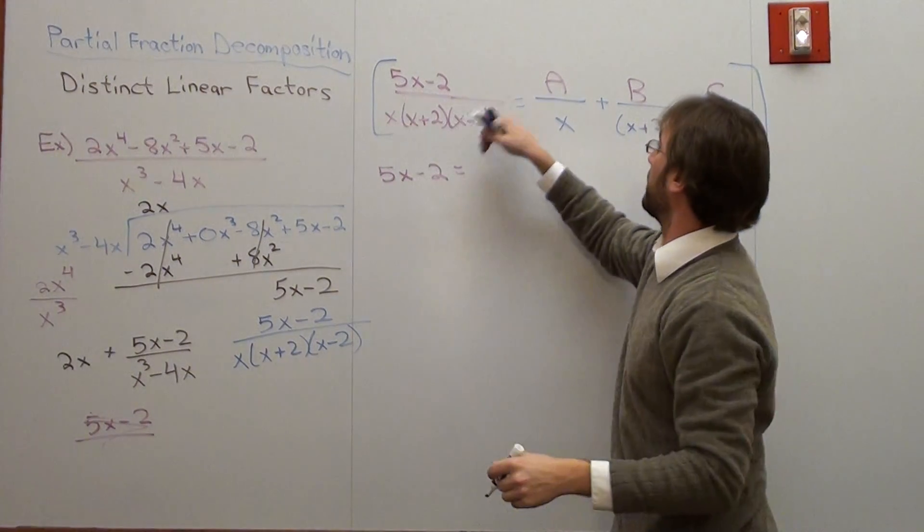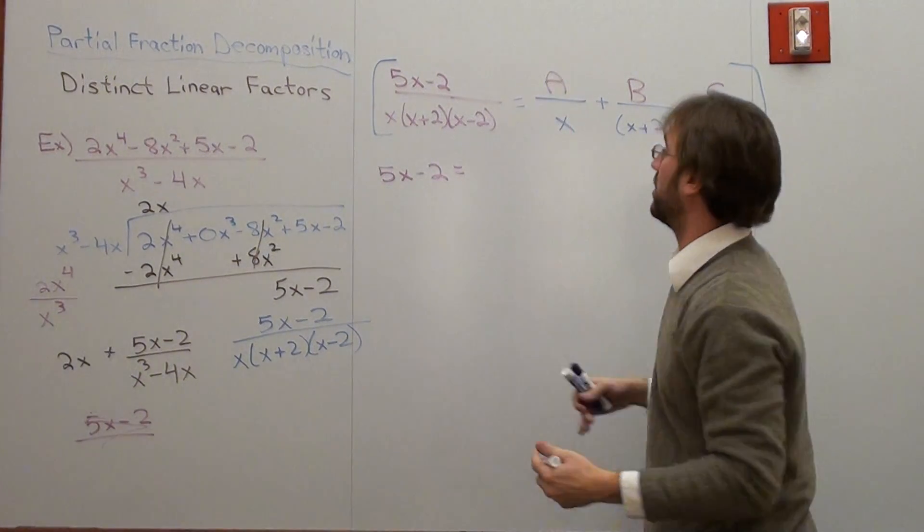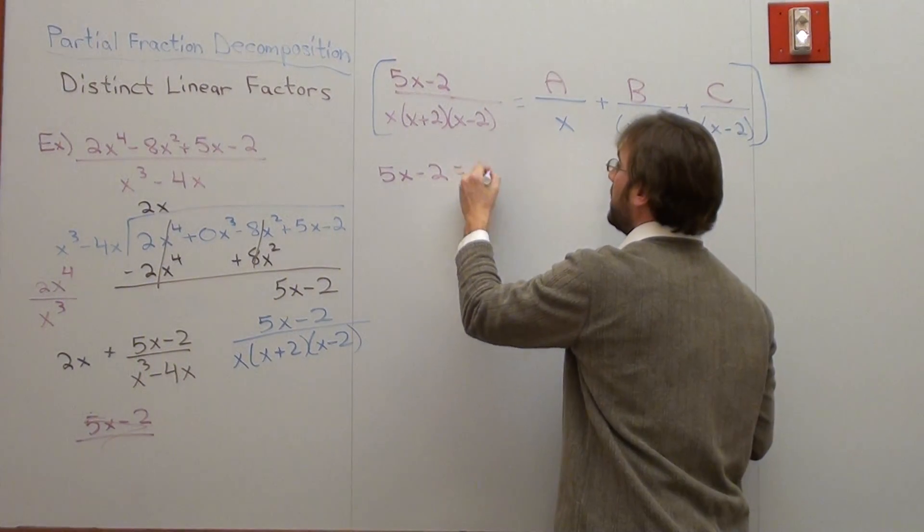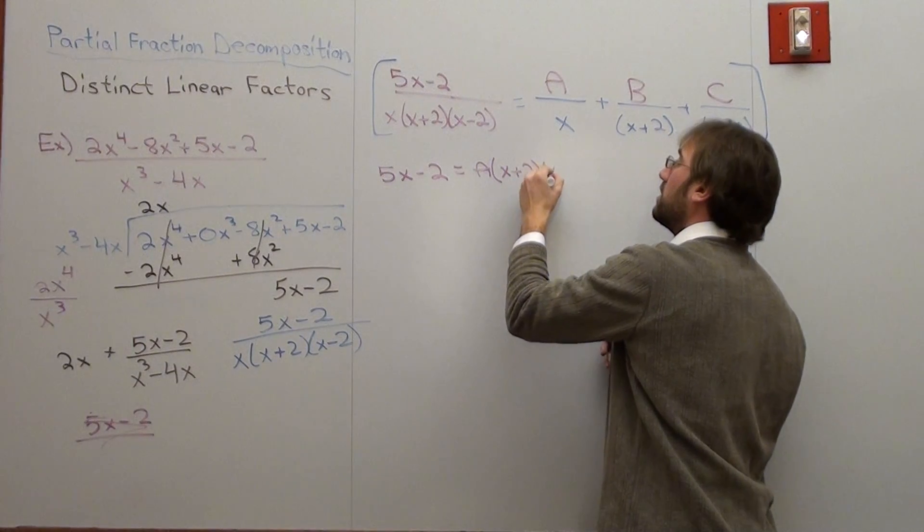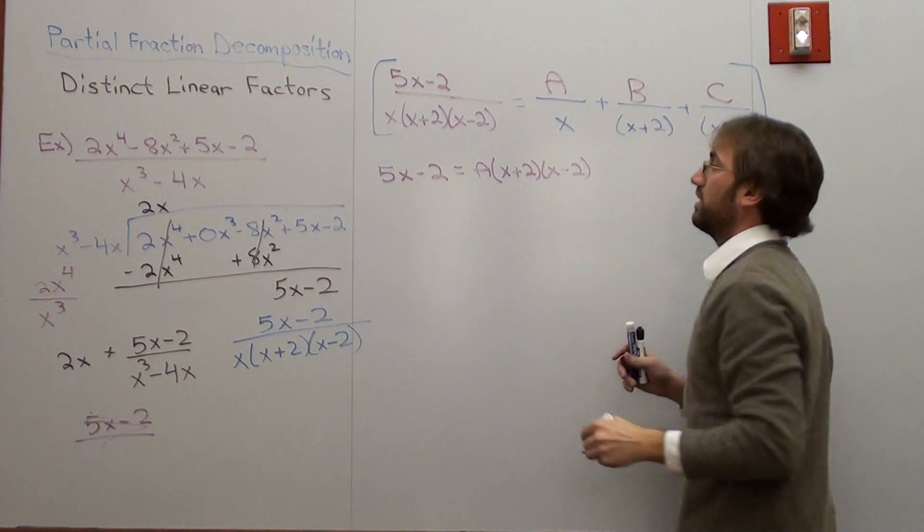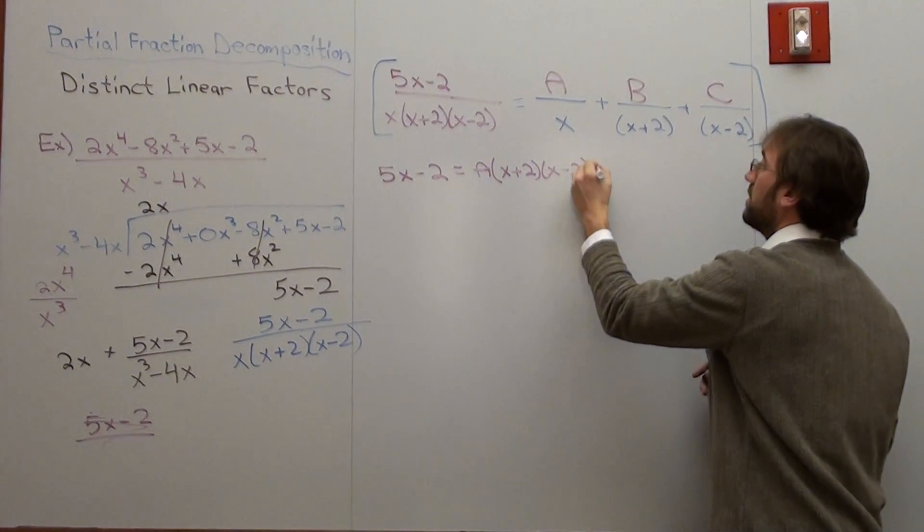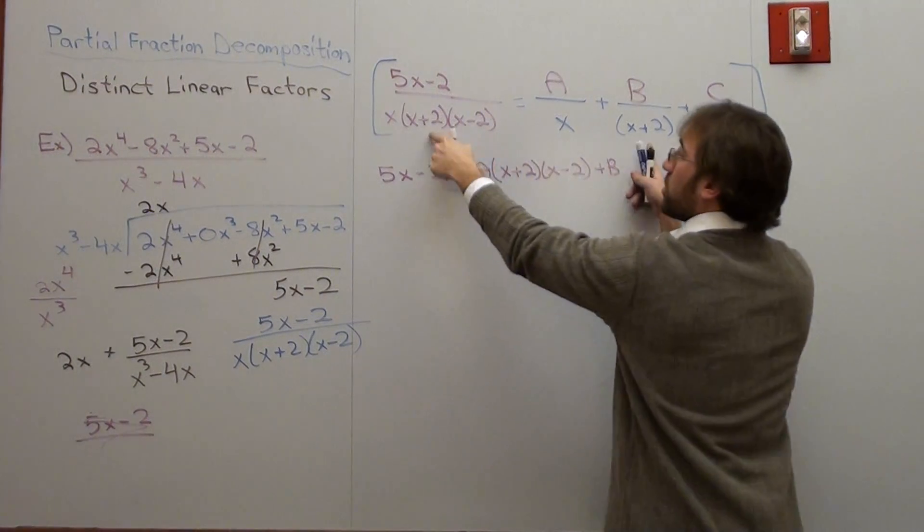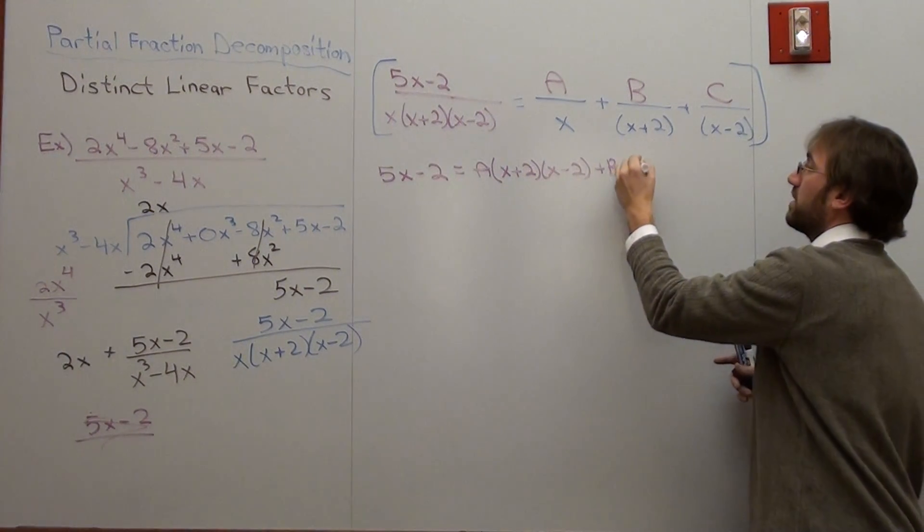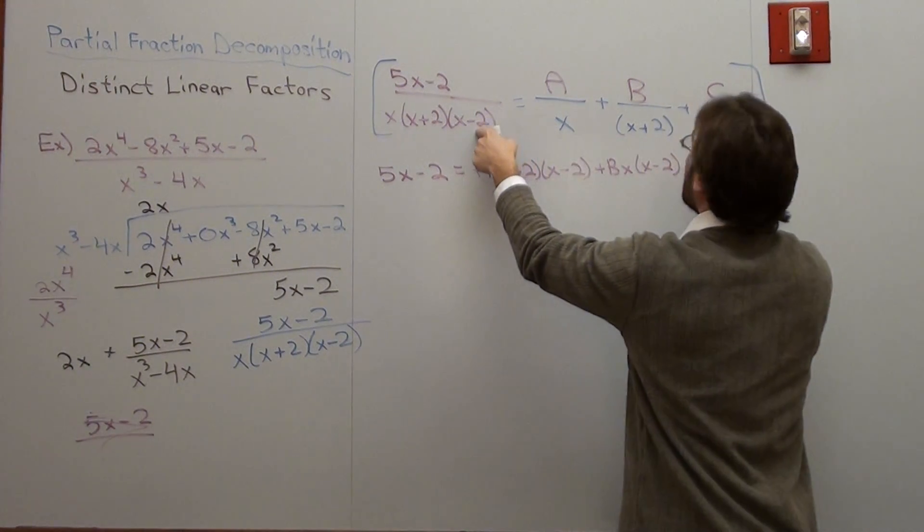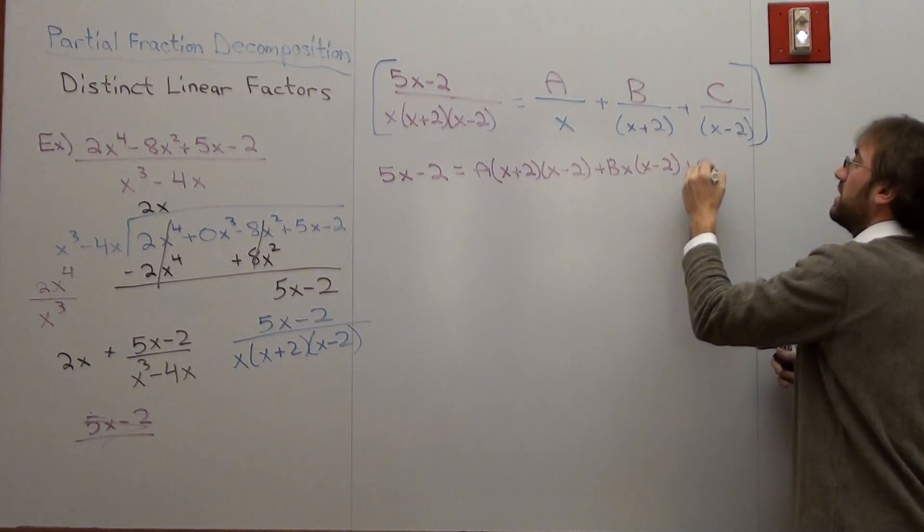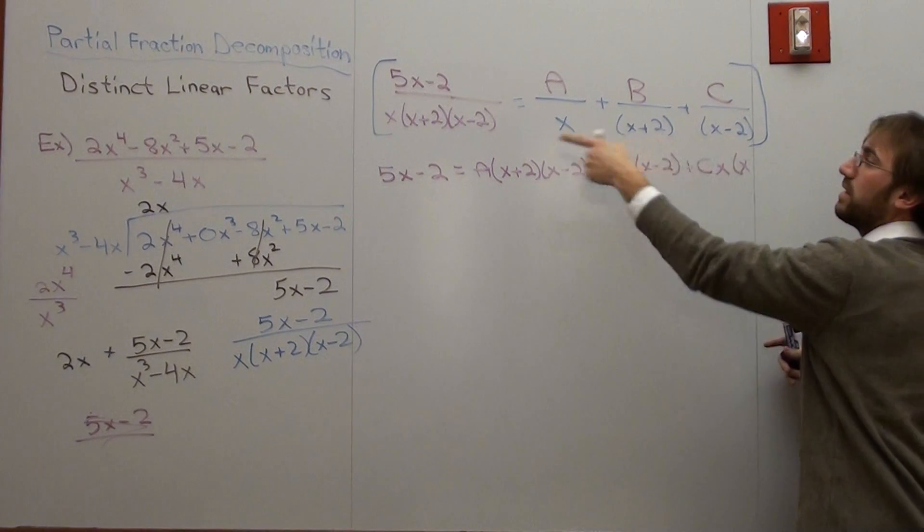If I multiply all three of these by this one, in the numerator, mind you, I'm going to get A, the x's go away, got x plus 2, x subtracted by 2. Then I'm going to have B, the x plus 2's go away, I'm going to be left with x, x minus 2. And then the x minus 2's will go away, I'll be left with C, x, x plus 2.